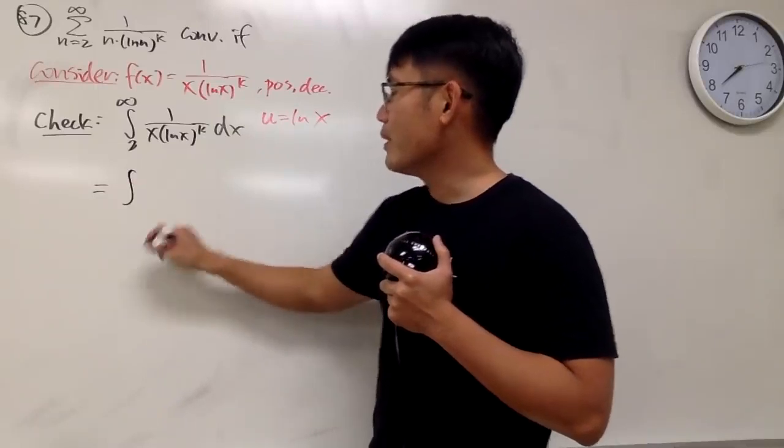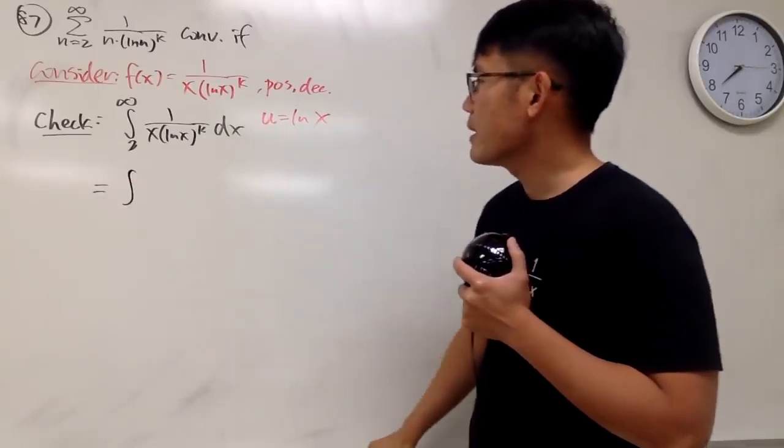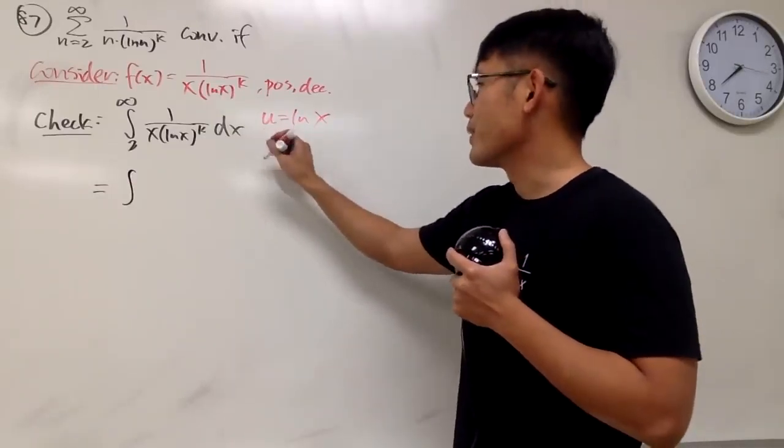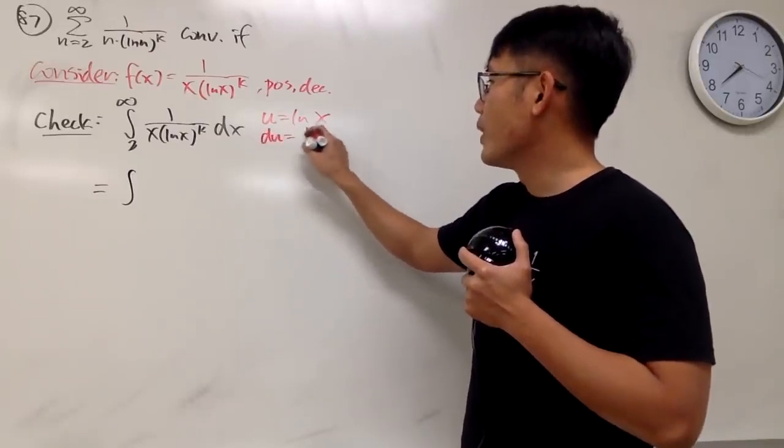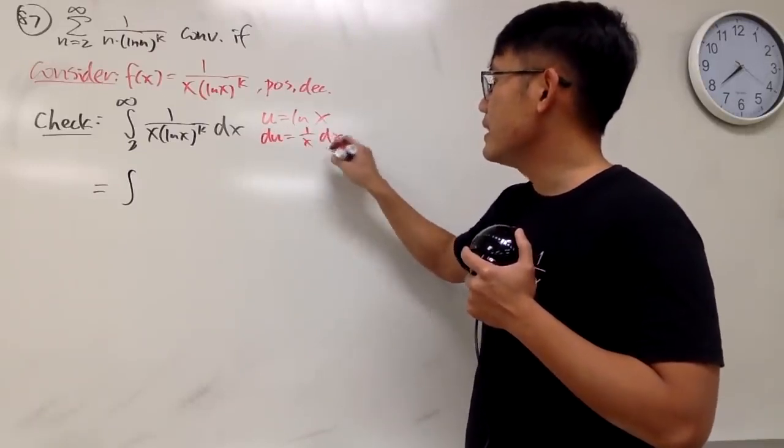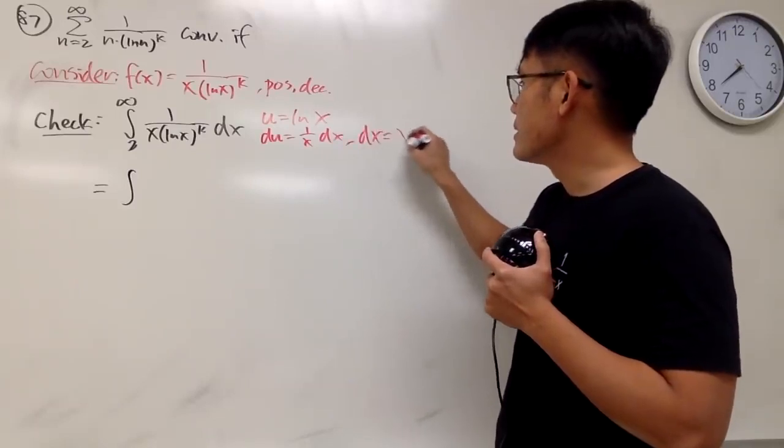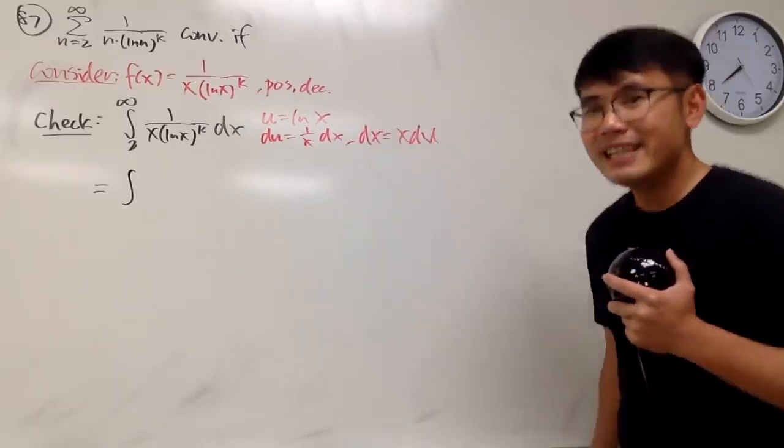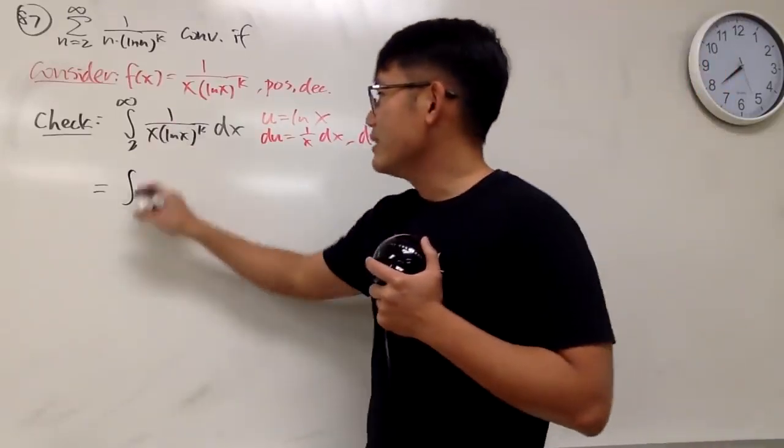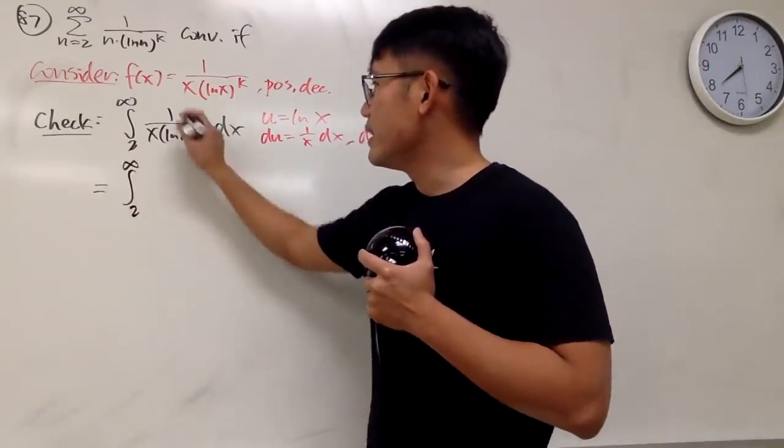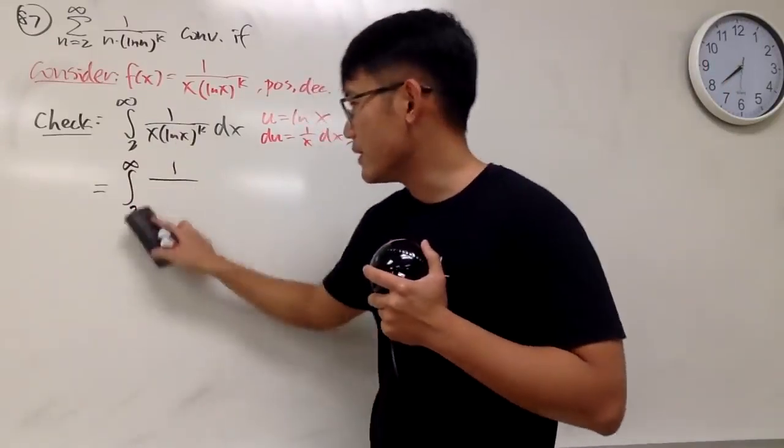This right here is equal to the integral of, okay, I'll just do that for you guys. du is equal to 1 over x dx, and dx is the same as x du. Okay, you see that this right here is 2 to infinity, and you get 1 over, sorry, not 2 to ln infinity.